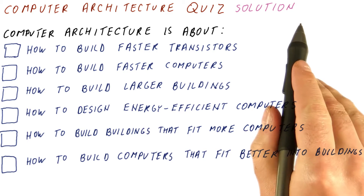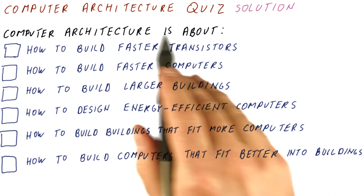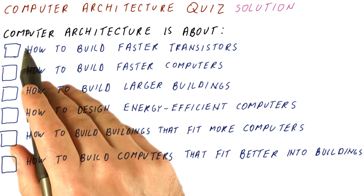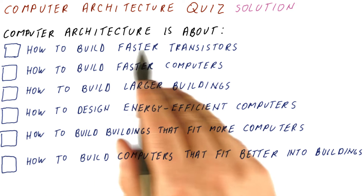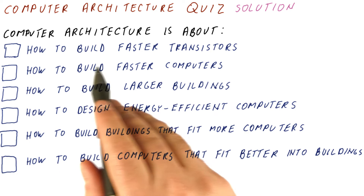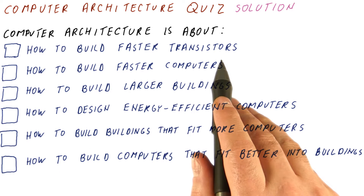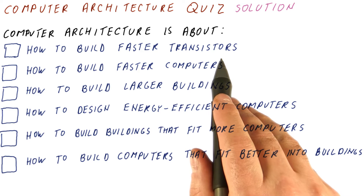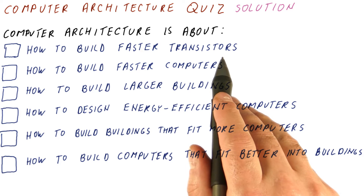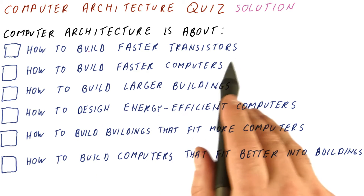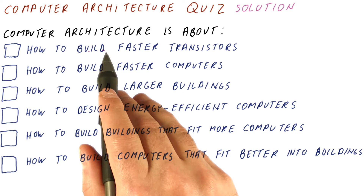Okay, let's look at the solution for our computer architecture quiz. The question was what computer architecture is about. Is it about building faster transistors? It is not. Computer architecture is about finding how to use these faster transistors to build better computers in some way.